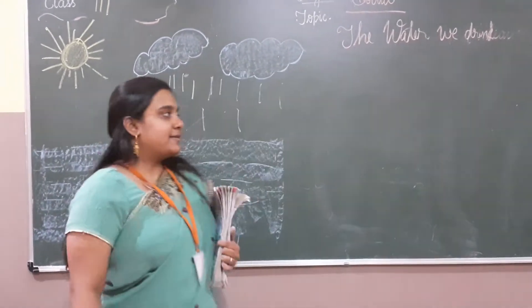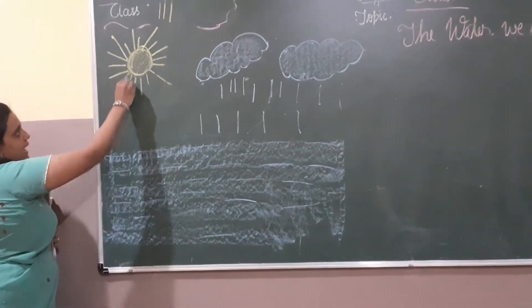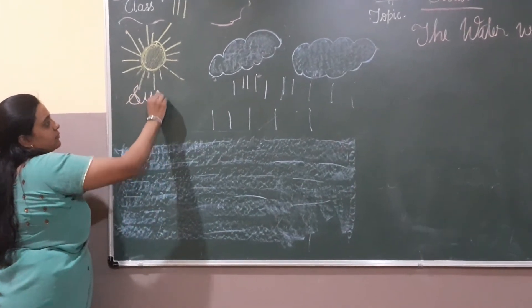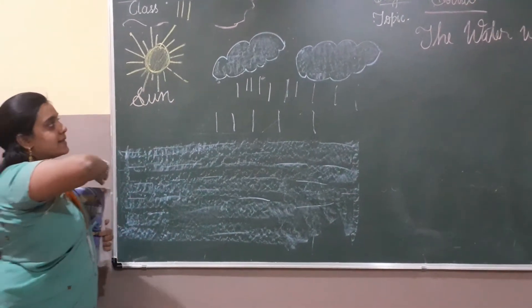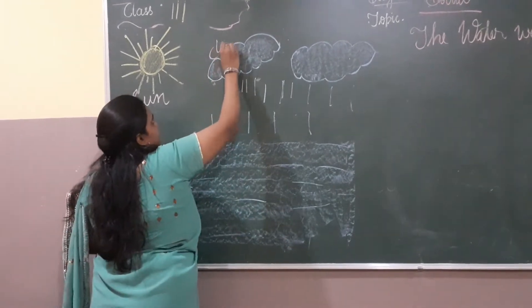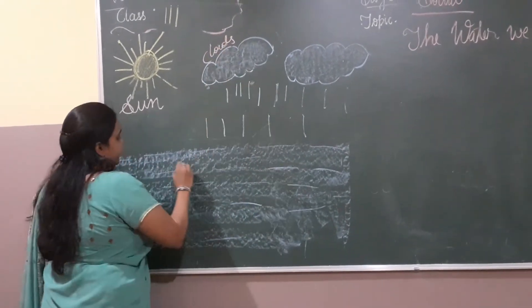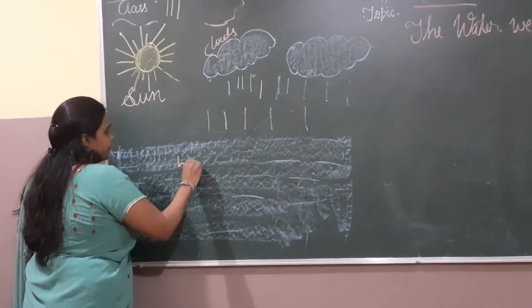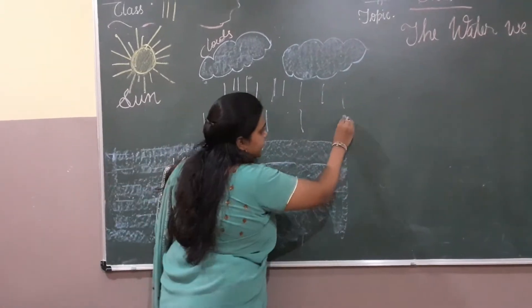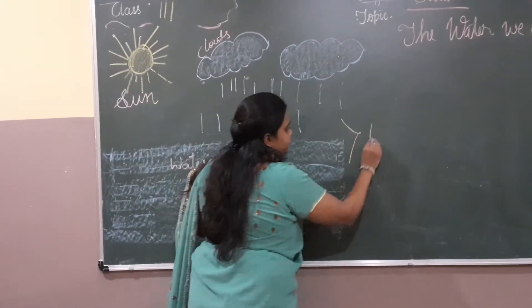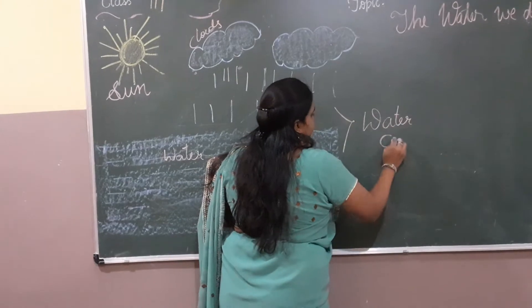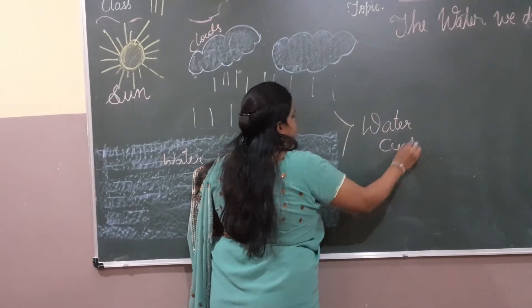First, let's see what we have here in the diagram. We have the sun, we have clouds, and we have water. So what is the water cycle?